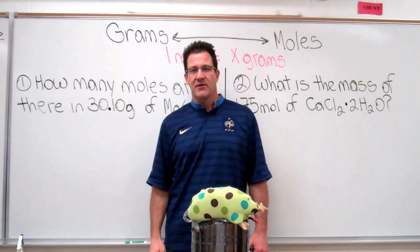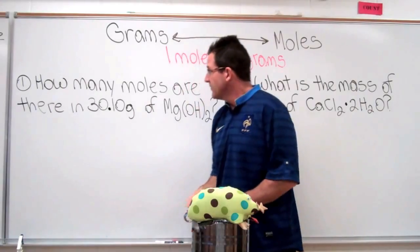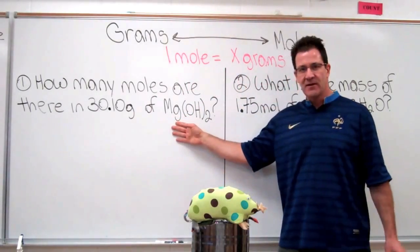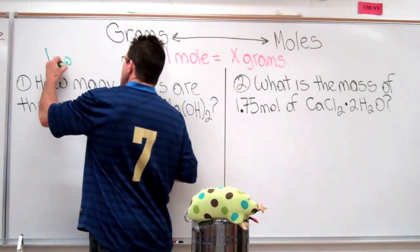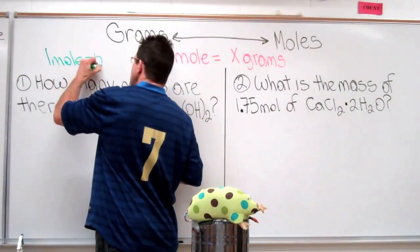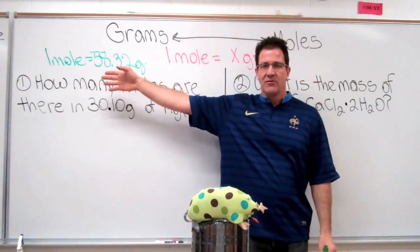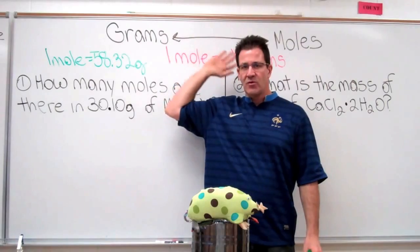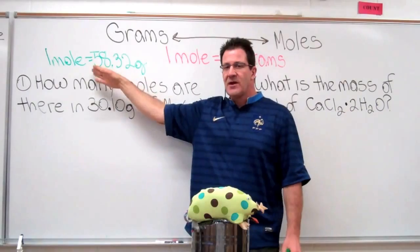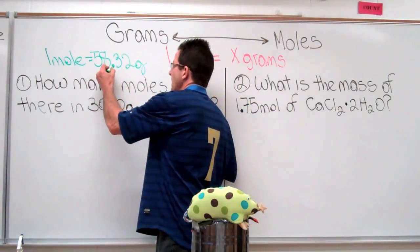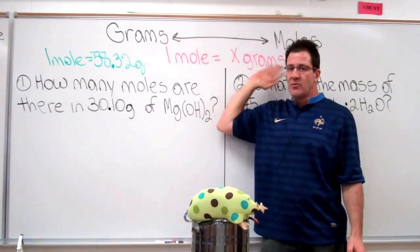Now, in a previous video I showed you how to calculate the molar mass, and so for this video I'm just going to write them down here. For the first problem we have magnesium hydroxide. The molar mass of magnesium hydroxide is one mole is equal to 58.32 grams. I recommend that when you do these calculations from grams to moles or moles to grams that you write down the molar mass in this form: one mole is equal to 58.32 grams, because that is going to be our conversion factor. That is what we're going to use to convert when we convert from grams to moles and moles to grams.